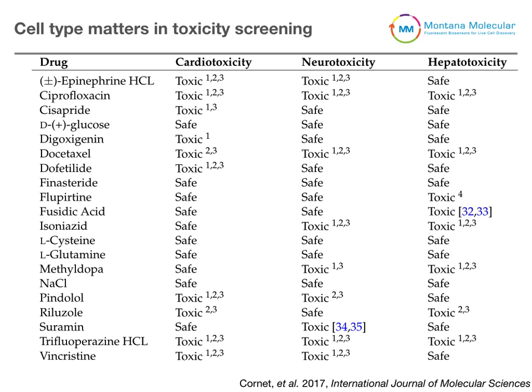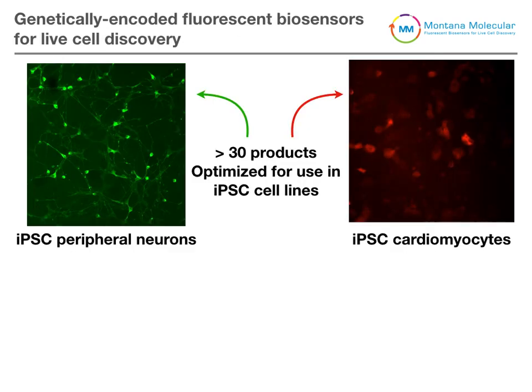When screening for different drug-induced toxicity or negative side effects, the cell type you're looking at matters, and that's why many companies have gone on to develop iPSC-derived cell types to look specifically at cardiotoxic compounds or, more broadly, neurotoxic, cardiotoxic, and hepatotoxic compounds. With these new iPSC-derived cell types, we need assays that are capable of being used in these highly specific cell types, and that's where Montana Molecular comes in.